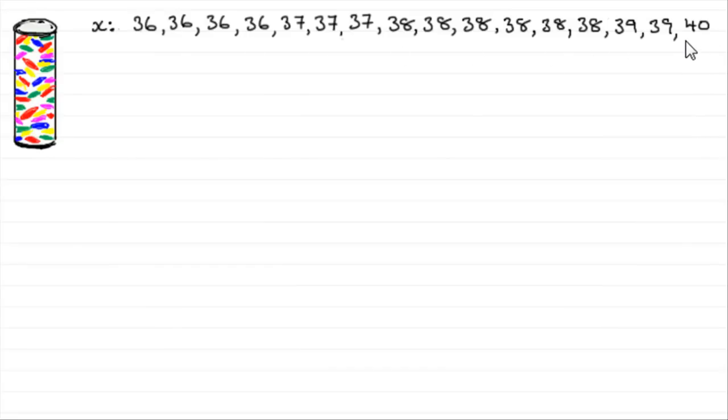So when it comes to working out the mean, all we need to do is find out what the total number of sweets were and share that evenly between 16 tubes. It's not going to be too hard to type these values into your calculator and then just divide by 16. But imagine you had a huge data set. What we can do is we can compress this data into what is called a frequency table.